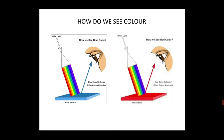Before we go into the details of shade selection, let us first know some basic points — like how do we see color, how do we perceive the color of a particular object. Whenever light falls on a particular thing, it starts absorbing some amount of light and reflecting some part of that light. The light which is reflected back is taken up by our eyes, and that is how we perceive the color of that object. For example, if light falls on a blue object, it absorbs all other wavelengths and reflects only those corresponding to blue.